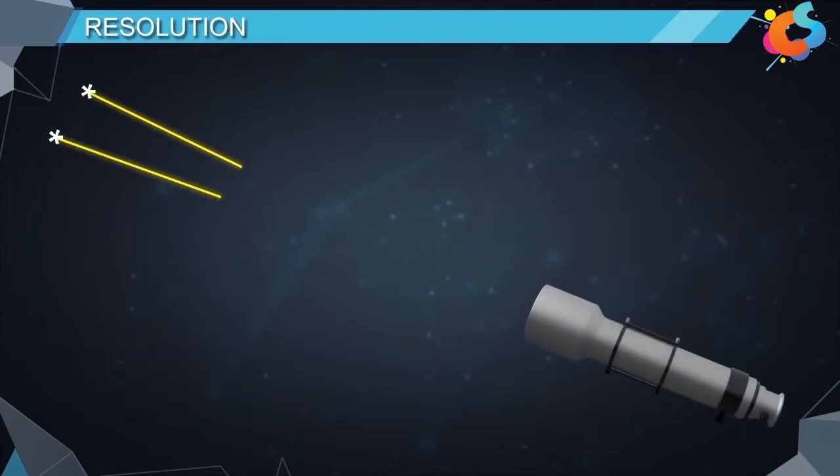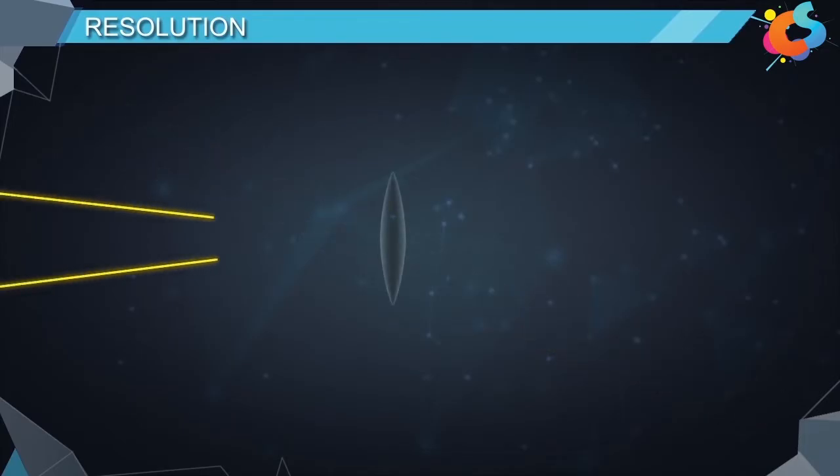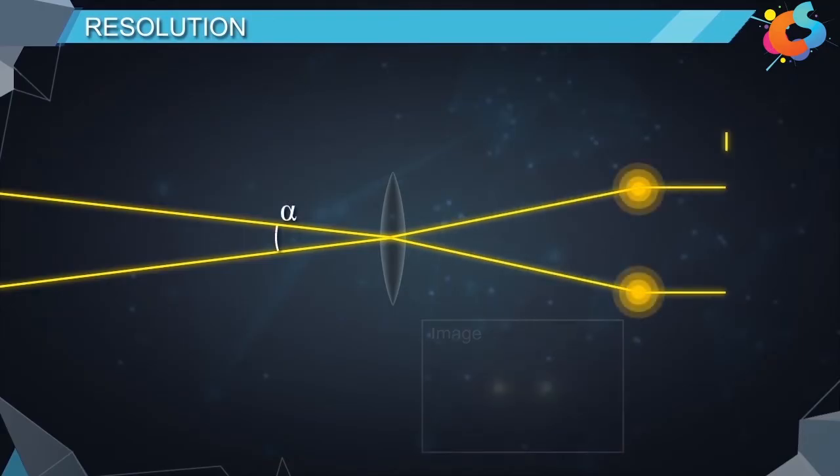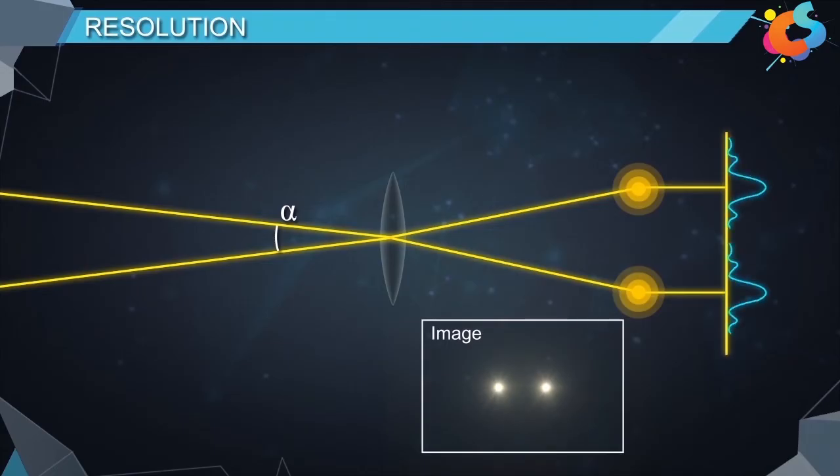Suppose we are observing a nearby star with the help of a telescope. Here light waves coming from these stars pass through the lens making an angle alpha at the lens. The rays undergo diffraction and produce an image on the screen.